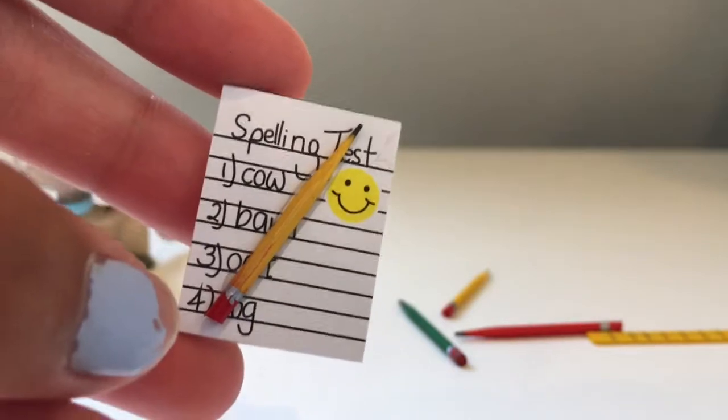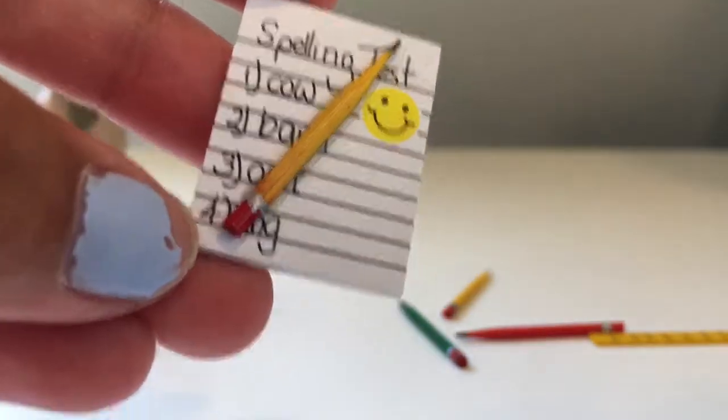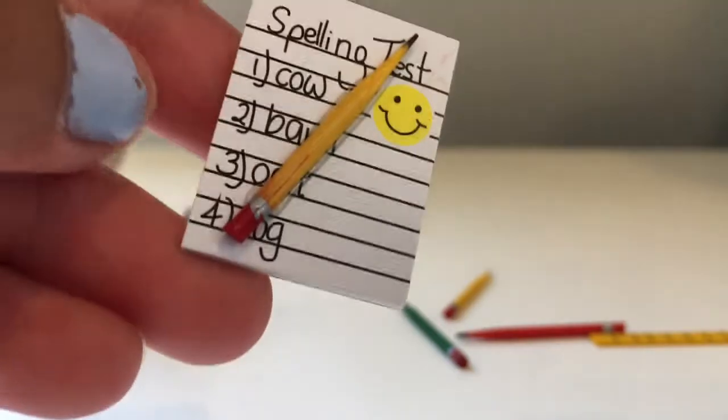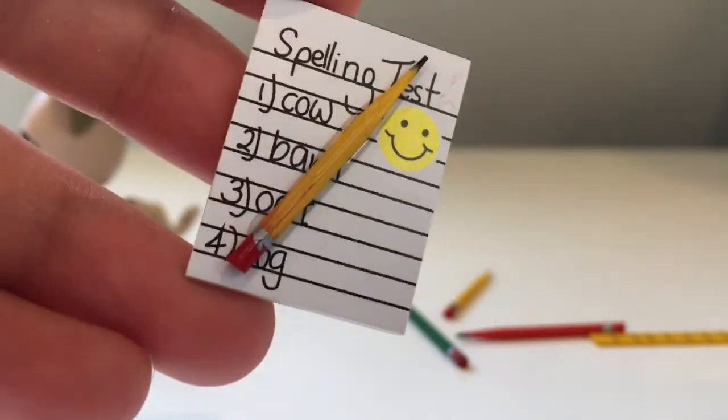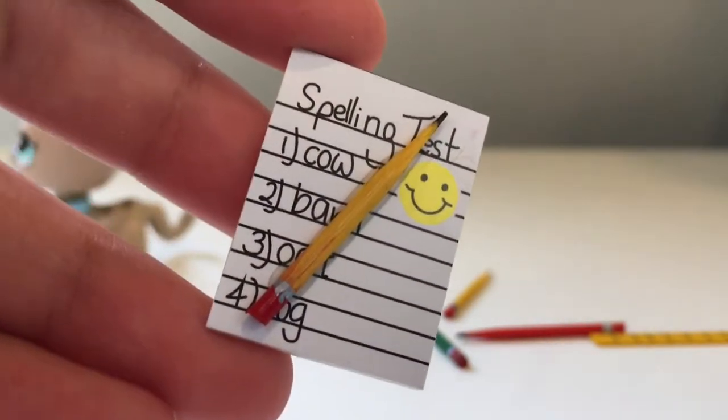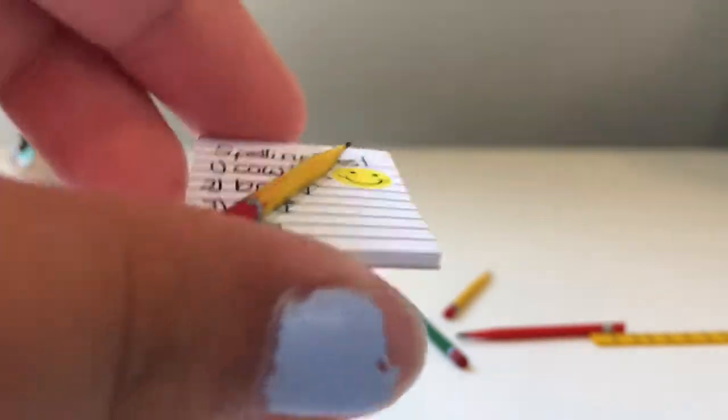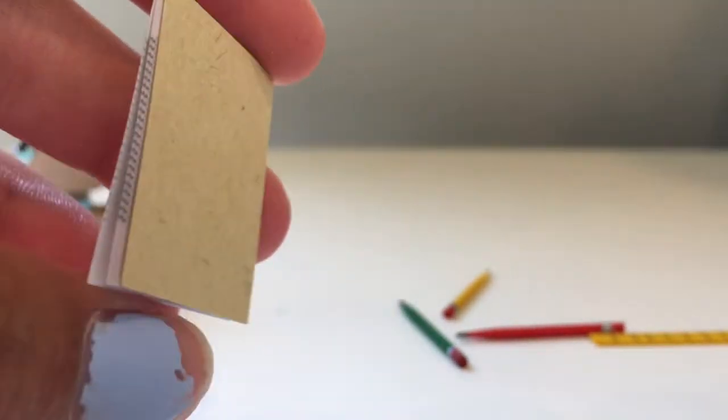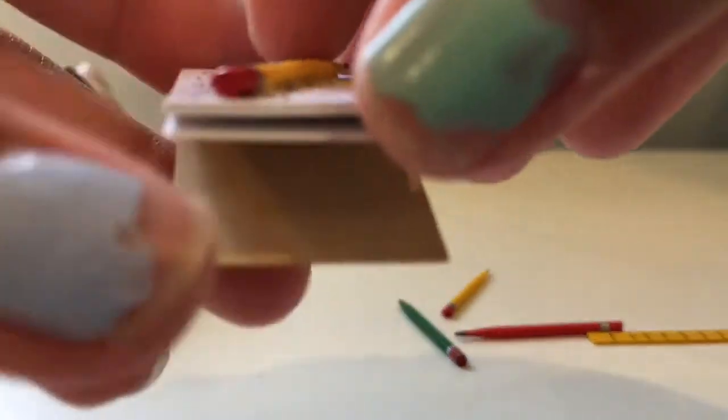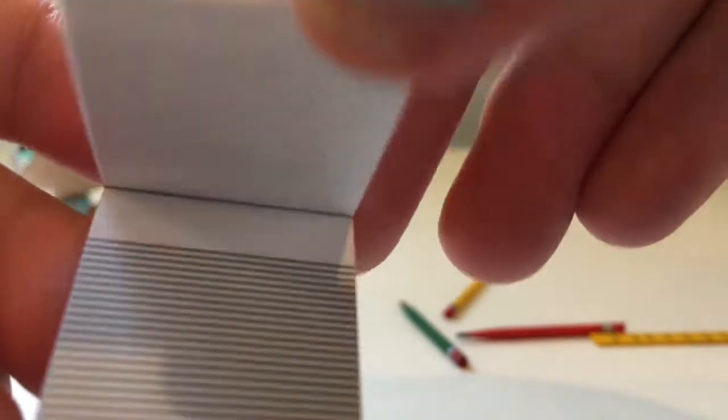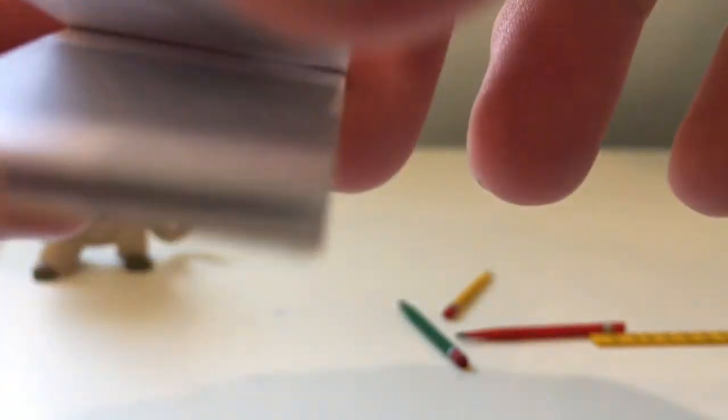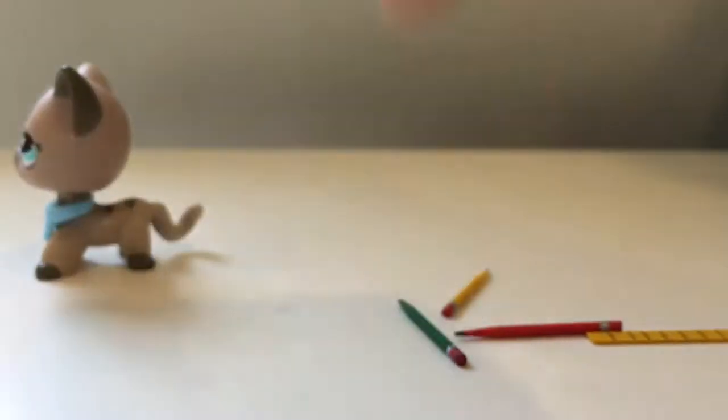So I can't get it off, but it says spelling test: cow, barn, dog, cat. It has a smiley face sticker on it though, so cute! And it's like an actual notebook, so that's super cute. Next are these pencils.